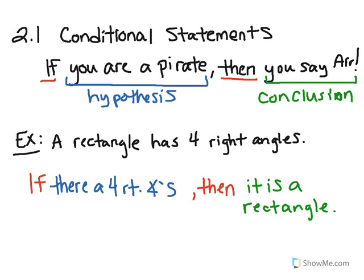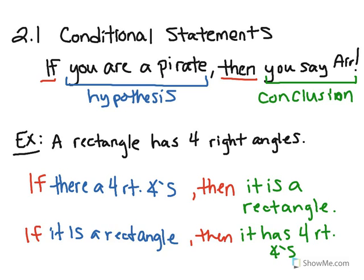Now, there's one way that's more preferred over the other, and I'm going to show you. I could write: if it is a rectangle, then it has four right angles. One of these is better than the other.